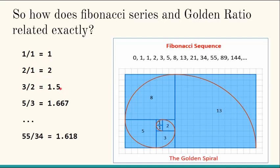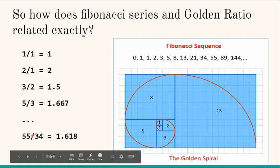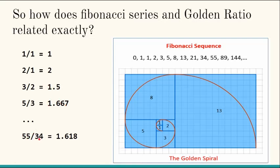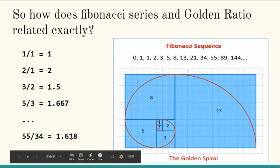And if you carry on and take larger numbers like 55 and 34, you would get eerily closer to this golden ratio only. Like 55 divided by 34 equals 1.618. In fact, if you take even larger numbers, it will get even more closer to this golden ratio.